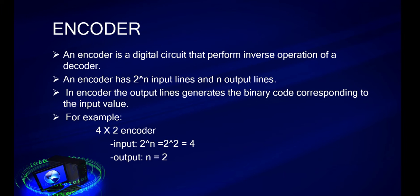Let's move on to encoder. An encoder is a digital circuit that performs inverse operation of a decoder. The encoder input lines are 2 power n and the output lines are n. In encoder, output lines generates the binary code corresponding to the input values.